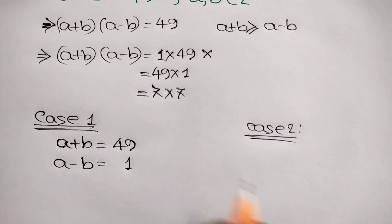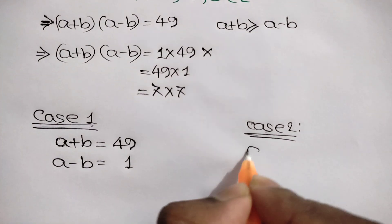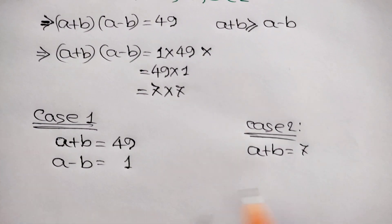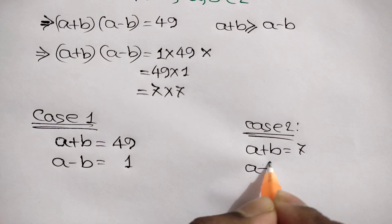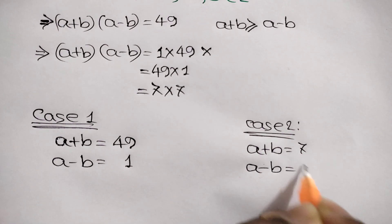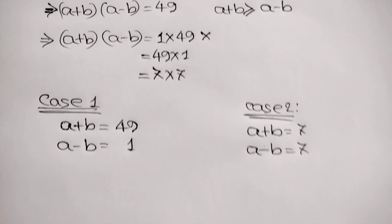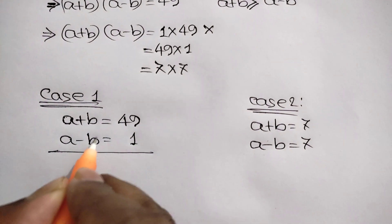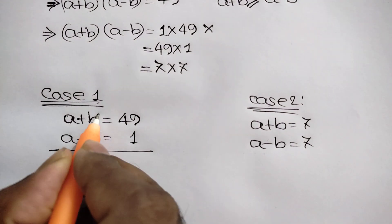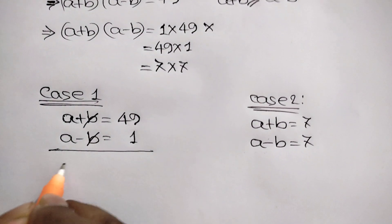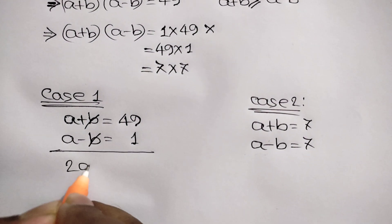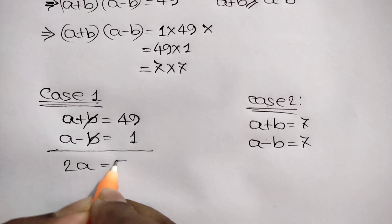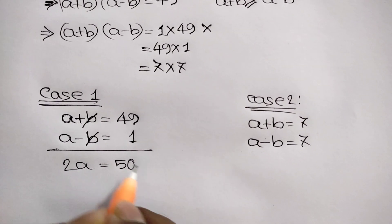Case 2: we write a plus b is equal to 7, and a minus b is equal to 7. Now, for Case 1, adding the two equations, the b terms cancel out, giving 2a is equal to 49 plus 1, which is 50.